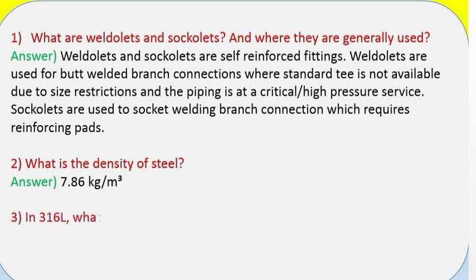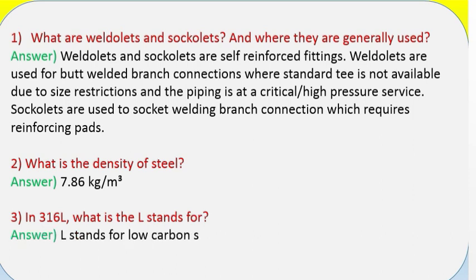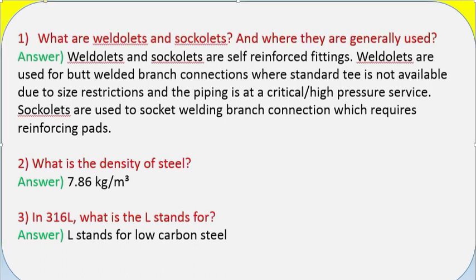Question 2: What is the density of steel? Answer: 7.86 kg/m³. Question 3: In 316L, what does the L stand for? Answer: L stands for low-carbon steel.